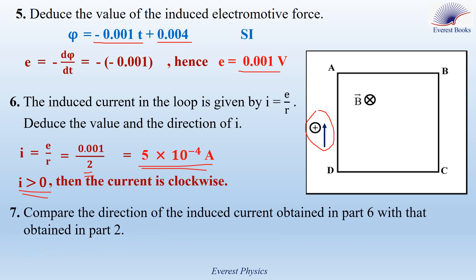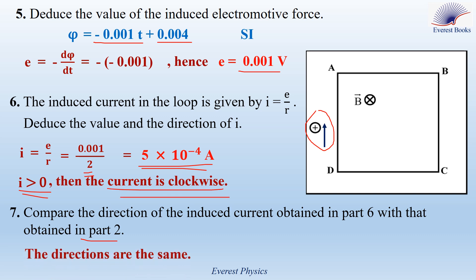Part 7. Compare the direction of the induced current obtained in Part 6 with that obtained in Part 2. In Part 2, we specified the direction of the induced current by applying Lenz's law, and the direction is clockwise. And here also, the direction is clockwise. Then the directions are the same.